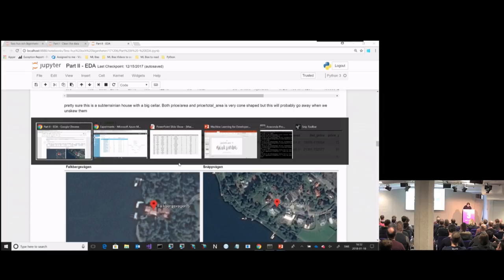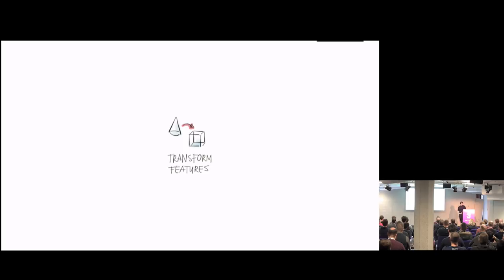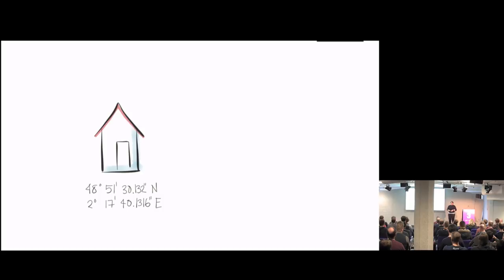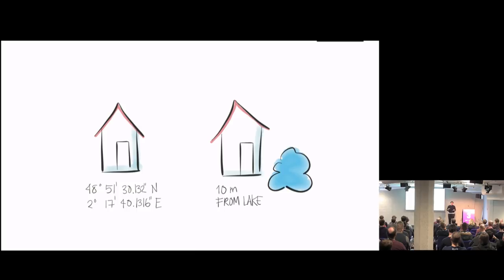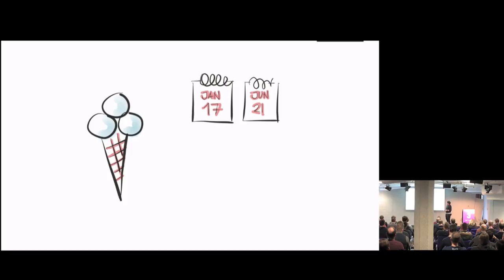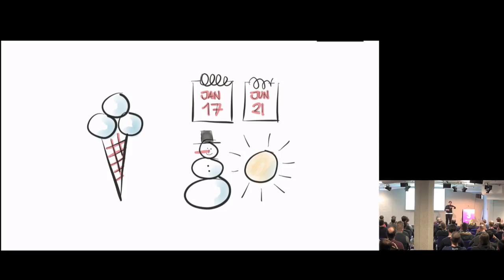Now we're ready to transform some features or create new features. From GPS coordinates, we can create how far away it is from different points of interest. Or if you're looking at ice cream sales and you have dates, you might want to turn dates into whether it's winter or summer, or whether it's a holiday or weekend — something that's a better estimator than the actual dates. The goal is to make as much useful information as possible out of the data you do have.